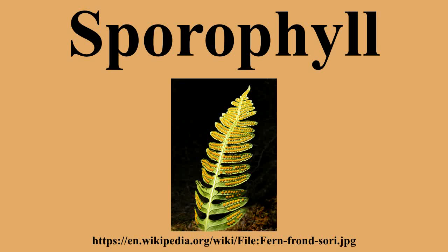Some plants do not produce sporophylls. Sporangia are produced directly on stems. Psilotum has been interpreted as producing sporangia on the terminus of a stem. Equisetum always produces strobili, but the structures bearing sporangia have been interpreted as modified stems. The sporangia, despite being recurved, are interpreted as terminal.